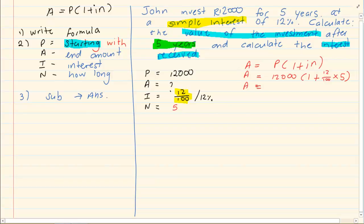Once you fill in the information, you have to familiarize yourself with the calculator. So you are going to press it in, 12,000 open brackets, 1 plus and then you have the fraction button. 12 over 100 go out of the fraction times 5 close brackets.